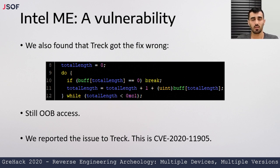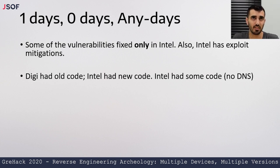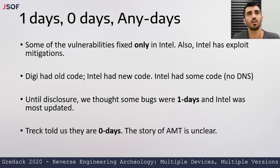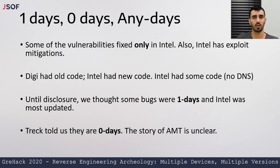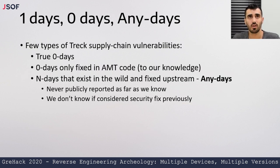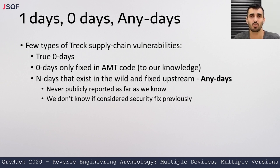We reported the issue to Trek, and it was assigned CVE-2020-11905. The story behind Intel AMT is interesting. Some vulnerabilities were fixed only in Intel. Intel had newer code with some extra mitigations; Digi had older code. Until disclosure, we thought some bugs were one-days and Intel was the most updated, but Trek actually told us these are zero-days. The story behind AMT is unclear — maybe Intel fixed issues independently. To summarize, there are a few types of Trek supply chain vulnerabilities: true zero-days; zero-days fixed only in Intel AMT code but not in Trek upstream; and vulnerabilities that are n-days existing in the wild and fixed upstream but never publicly reported as security fixes.